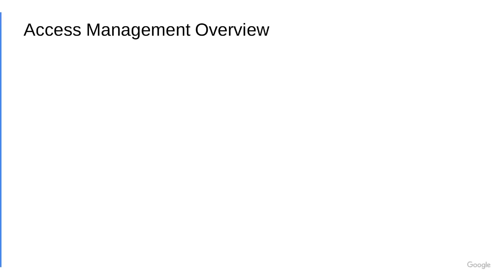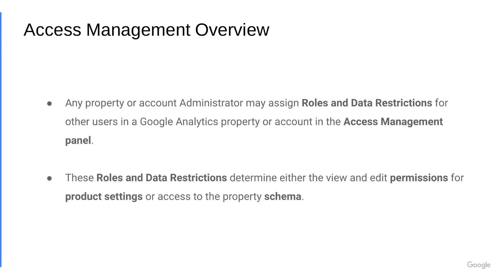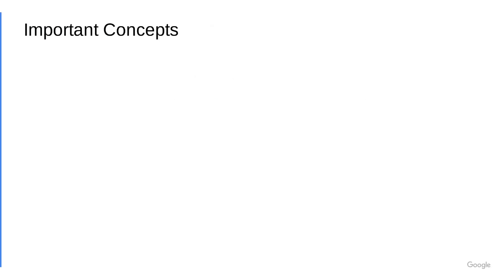I'd like to give you an overview of Access Management. Any property or account administrator may assign roles and data restrictions for other users in a Google Analytics property or account in the Access Management panel. These roles and data restrictions determine either the view and edit permissions for product settings or access to the property schema, such as dimensions and metrics in the property.